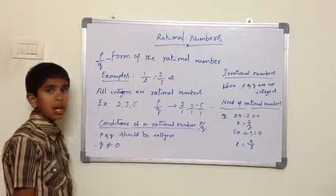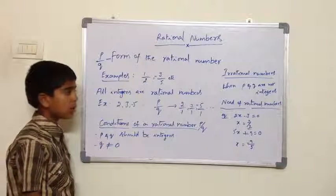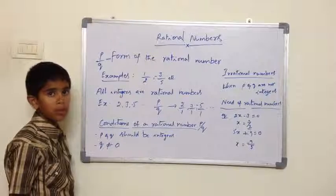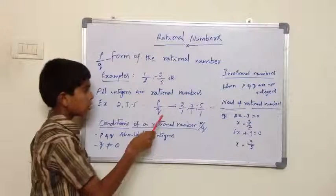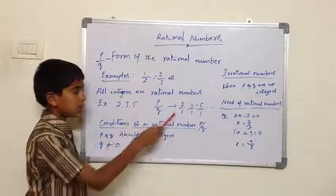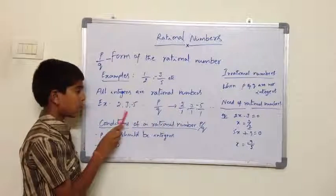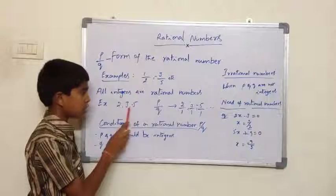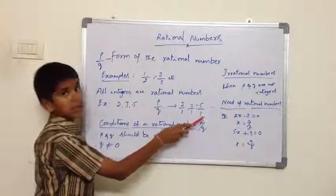Now we will see how they represent them in the form of P by Q. Note that 2 can be represented as 2 by 1, 3 as 3 by 1, and minus 5 as minus 5 by 1.